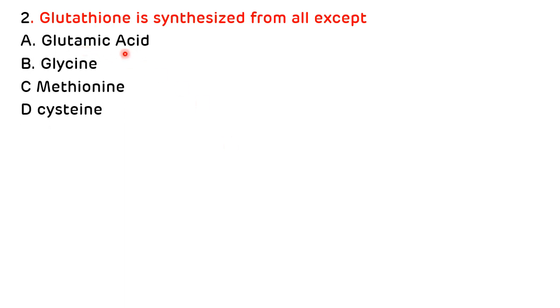Second question: glutathione is synthesized from all except — options are: glutamic acid, lysine, methionine, and cysteine. As discussed, glutathione is a tripeptide synthesized from glutamic acid, cysteine, and glycine, also known as gamma-glutamyl cysteinyl glycine. So the correct answer is C, methionine.